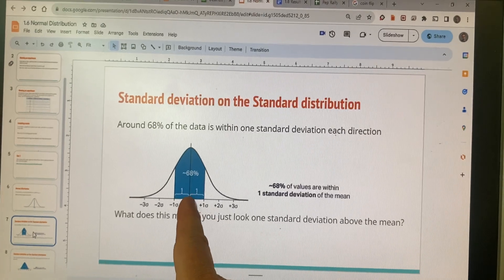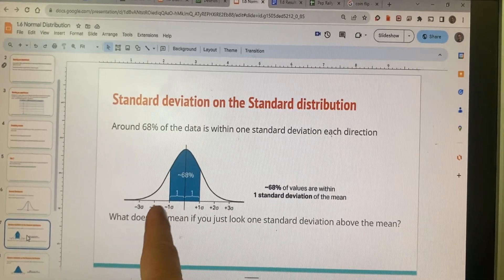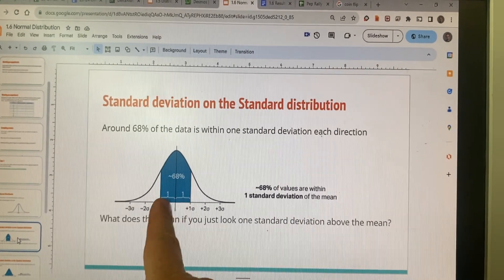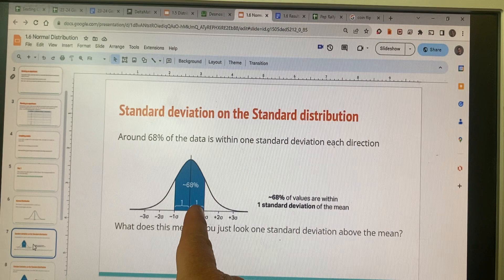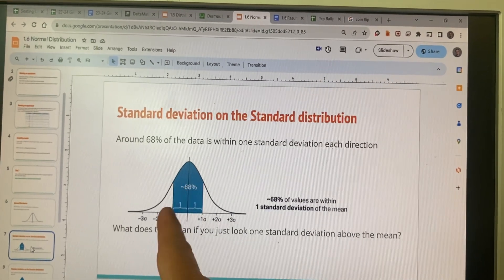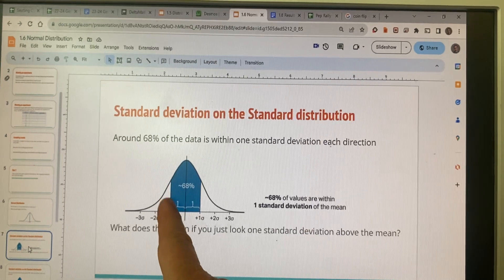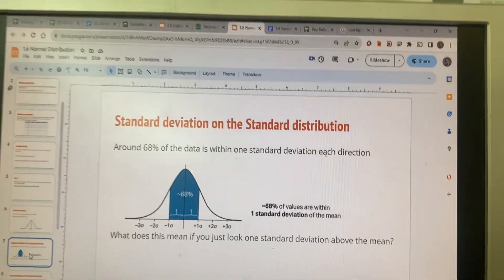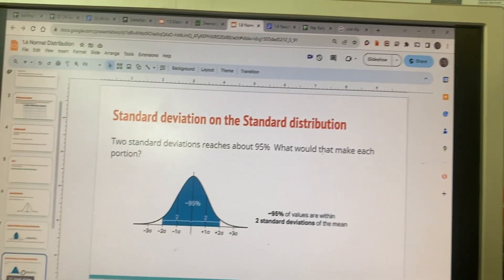So this is one standard deviation on each side. It's 68% of the values within one standard deviation. If we're going just one standard deviation above the mean, that should be 34%. If you're going just one standard deviation below the mean, that should also be 34%. So it's 68% total in there.